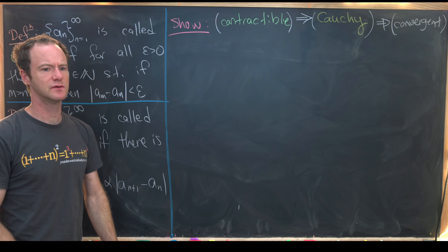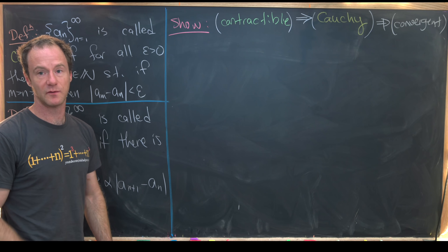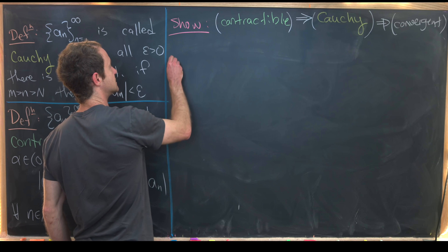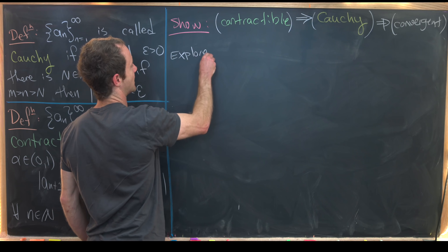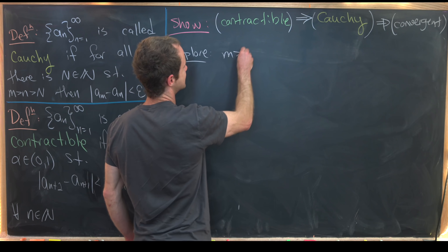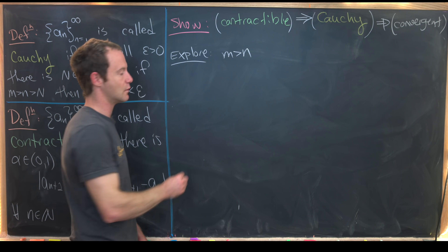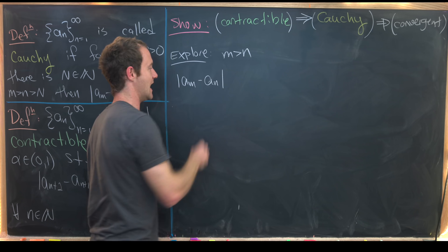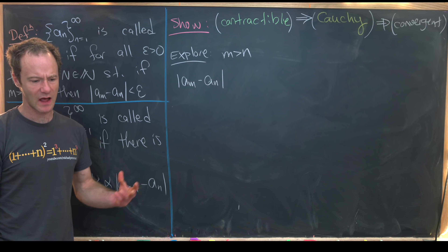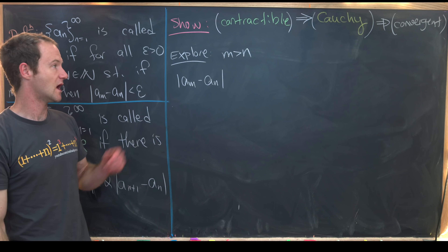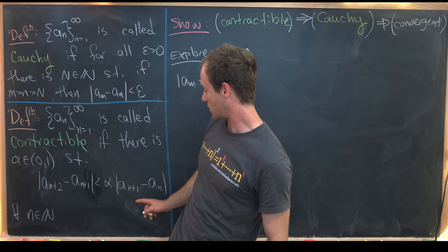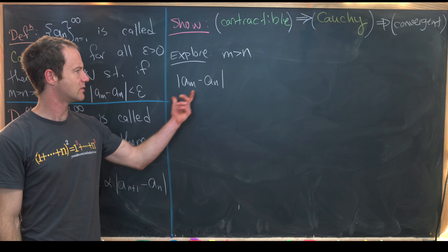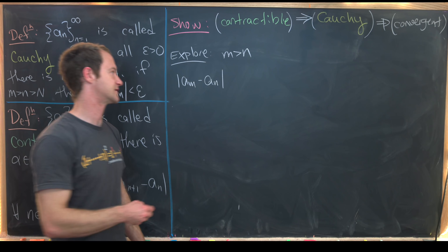Let's do a little bit of scratch work and exploration first, and then we'll write down a careful proof. So let's say we know that m is bigger than n and we want to look at the size of |a_m - a_n|. Contractibility only says something about the size of consecutive terms, so we probably want to express this in terms of consecutive terms.